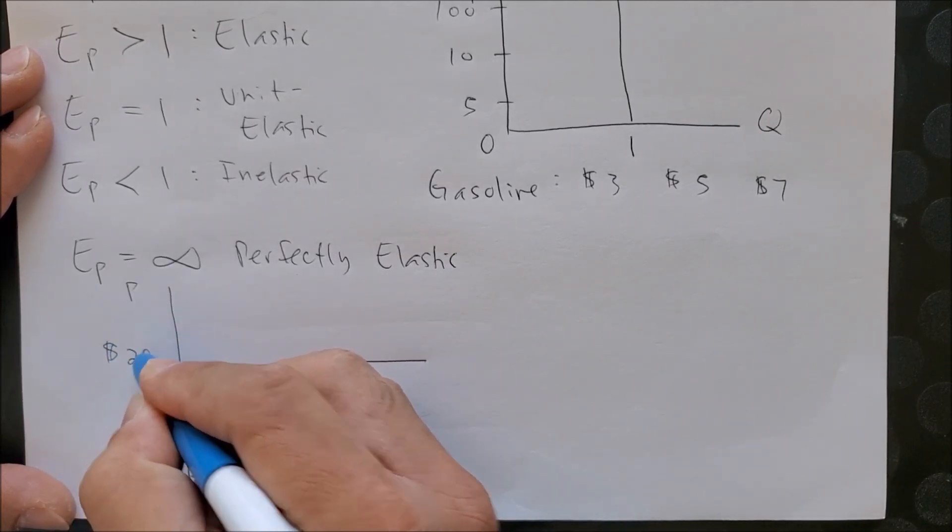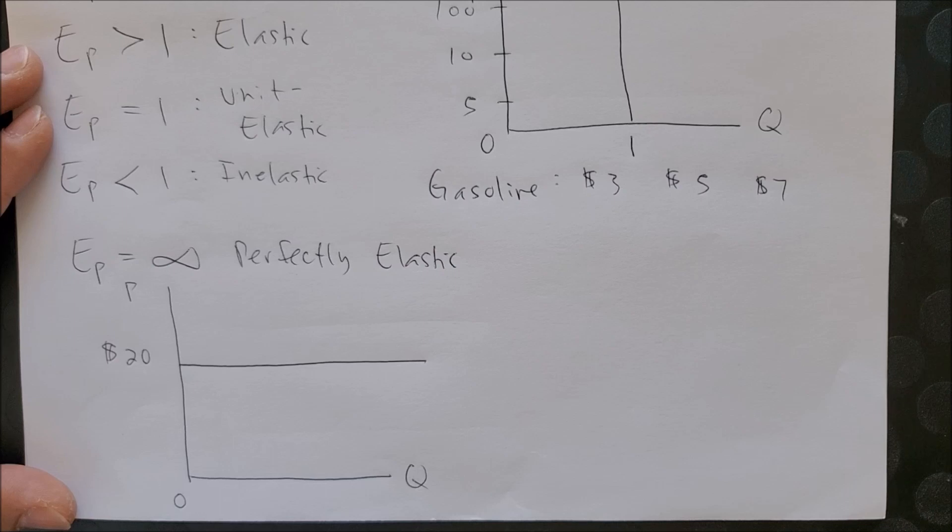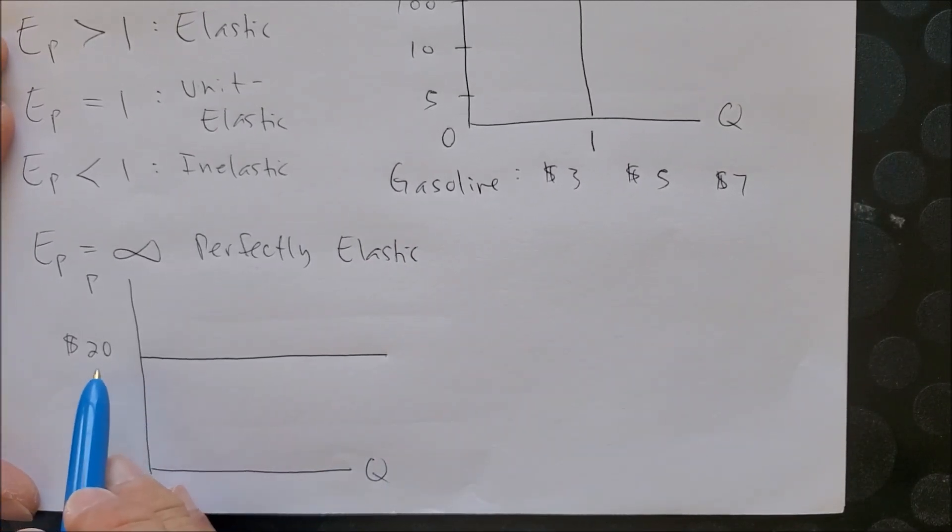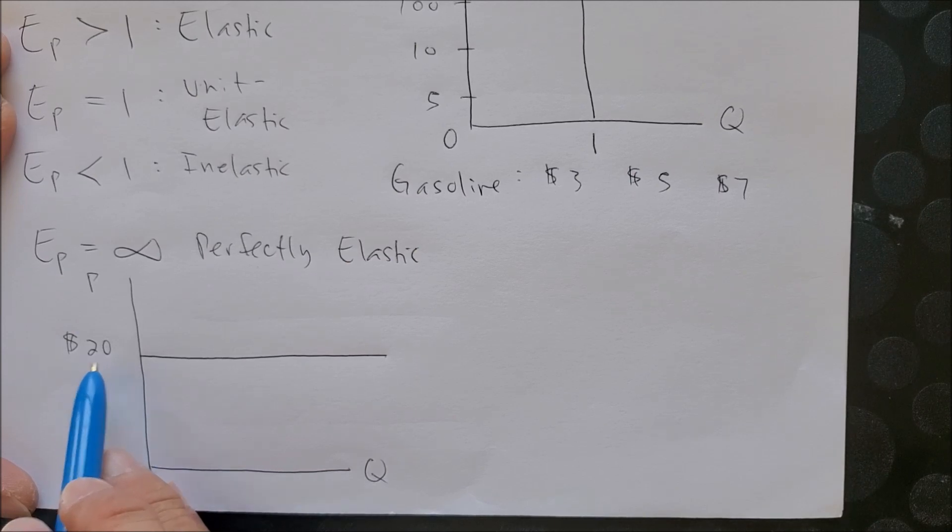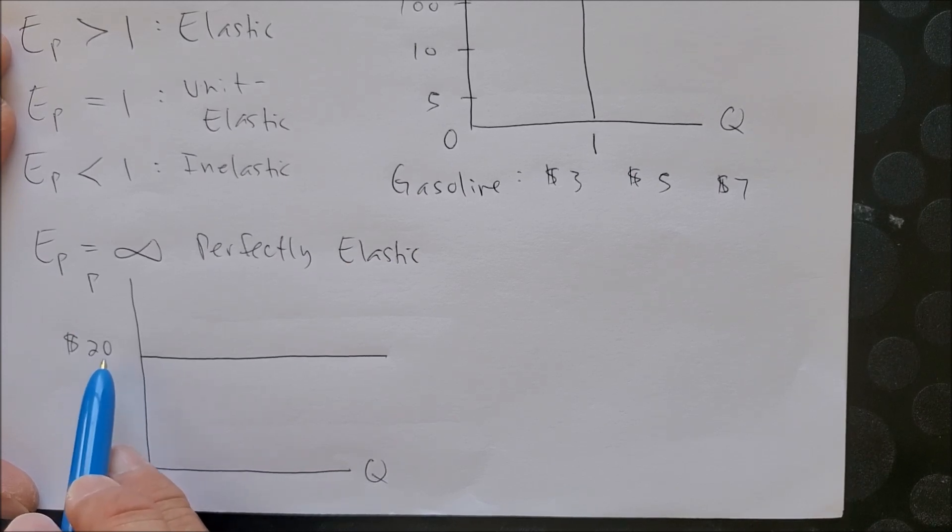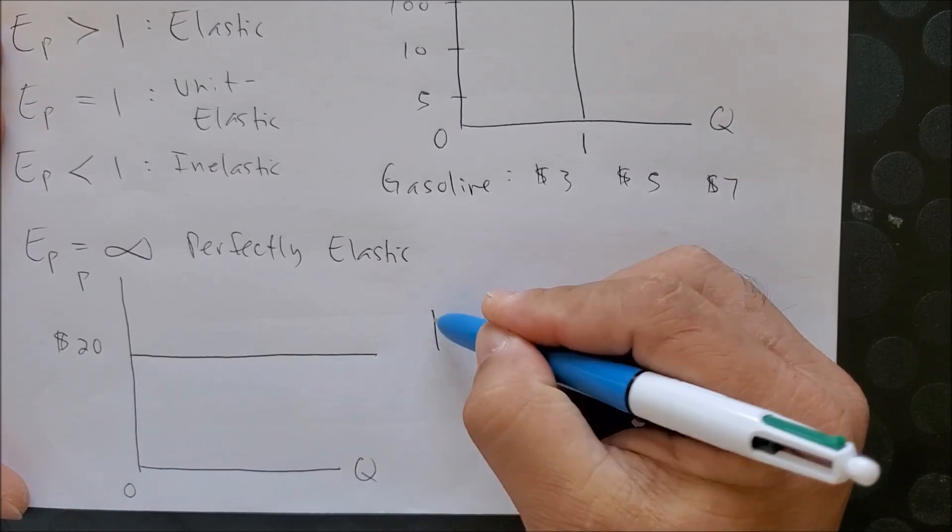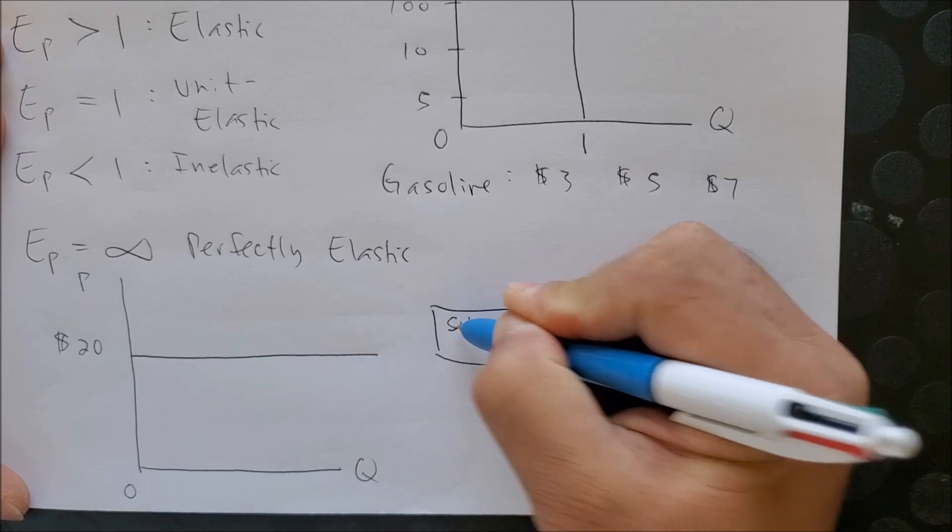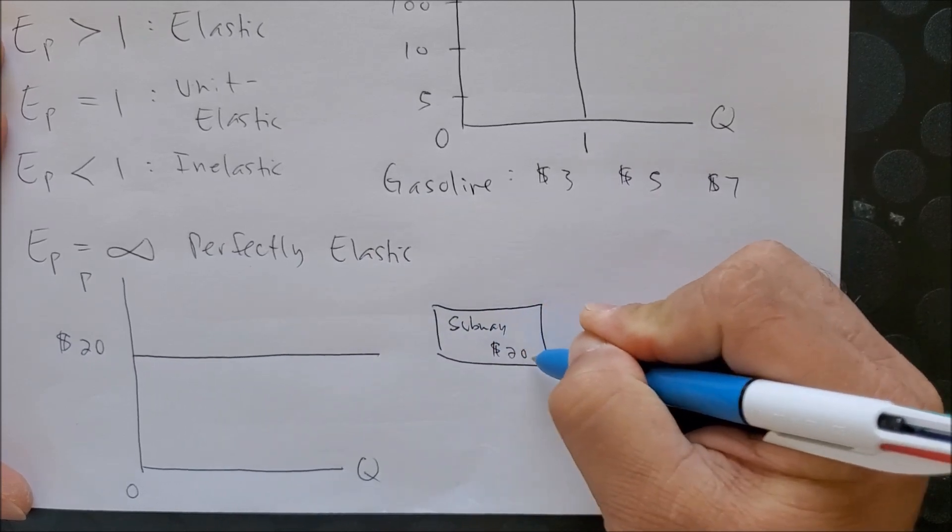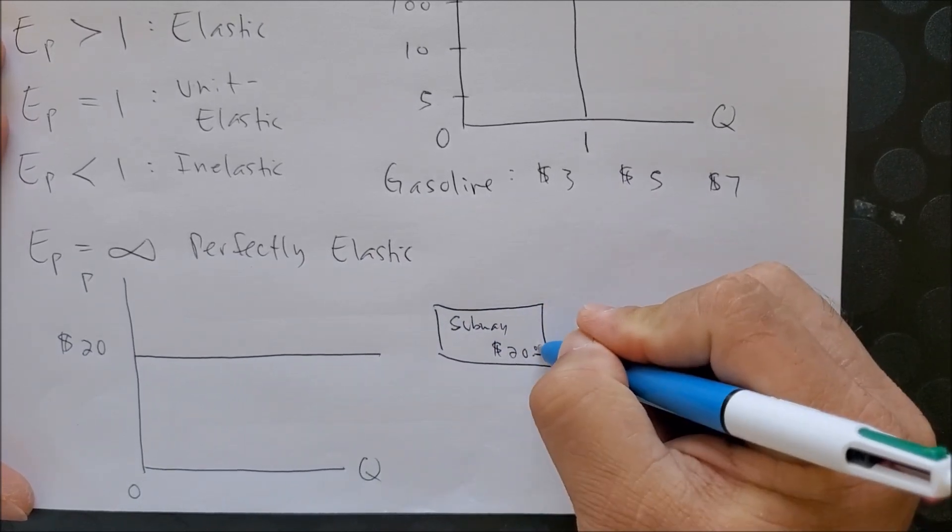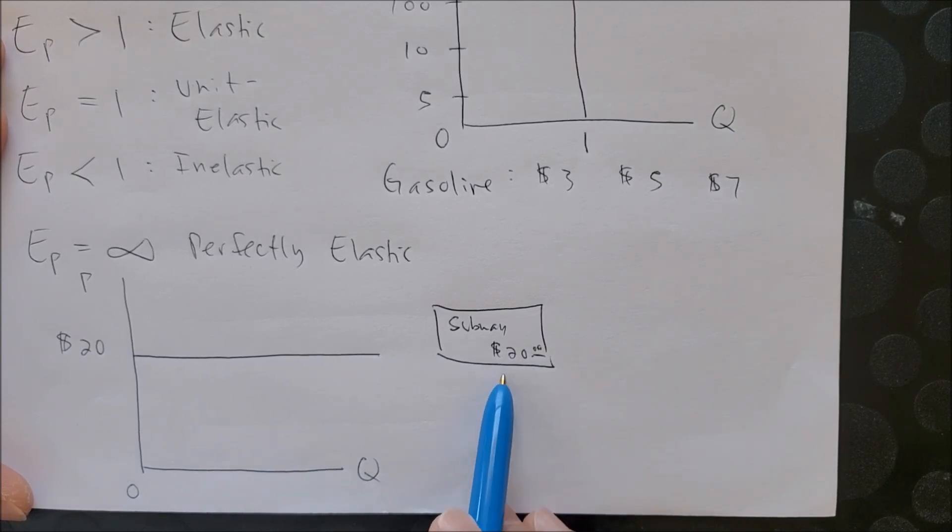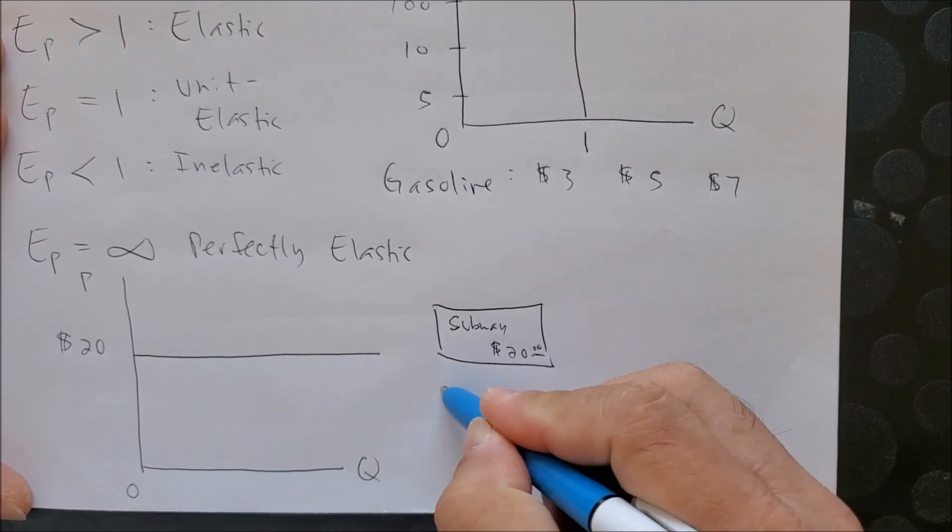This represents a perfectly elastic graph where we can put here on the y-axis twenty dollars. This tells you that you know the value of the good and you are not willing to pay more than twenty dollars for this good. For example, if I were to sell you a gift card at Subway and the Subway has a value of twenty dollars, but because you are a special student of mine I'm going to sell you the gift card for twenty-five dollars, would you buy it?